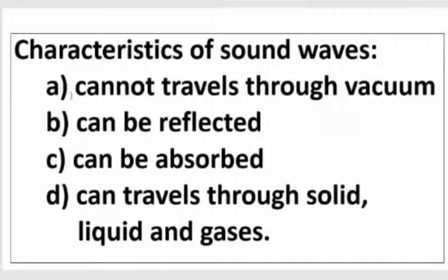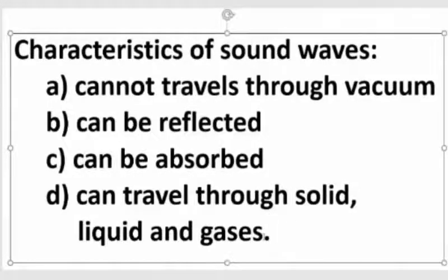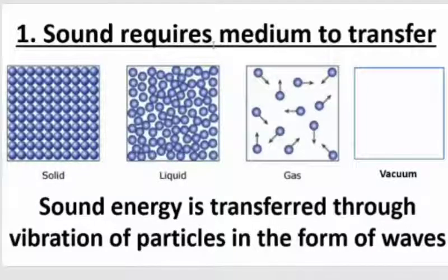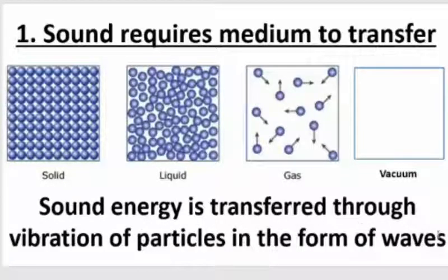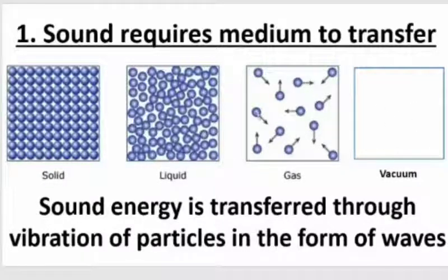Characteristics of sound waves: first, sound cannot travel through vacuum. Second, sound waves can be reflected, absorbed, and can travel through solid, liquid, and gases. Sound requires a medium to transfer. In solid, liquid, and gas, the particles help sound transfer. In vacuum there are no particles, so sound cannot be transferred — that's why you cannot hear sound in vacuum.